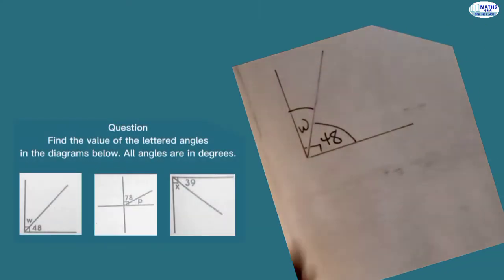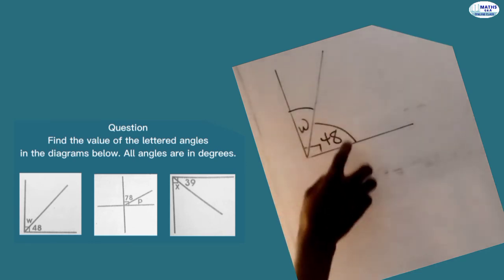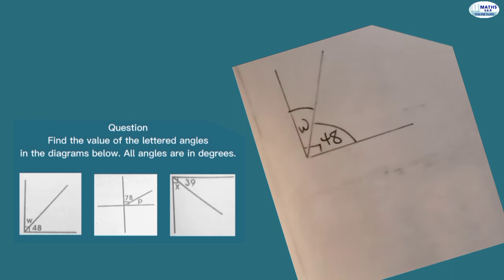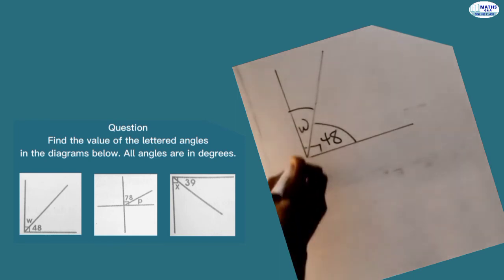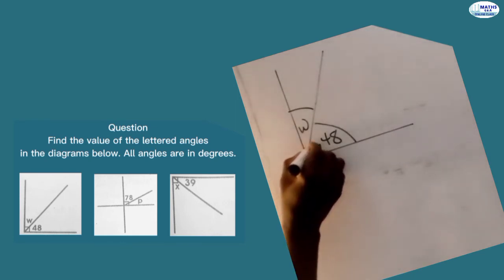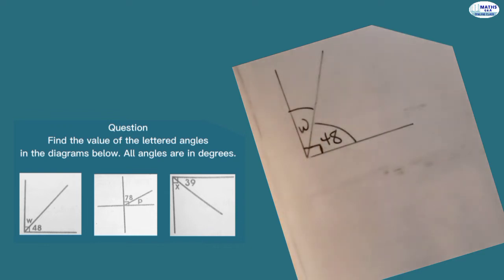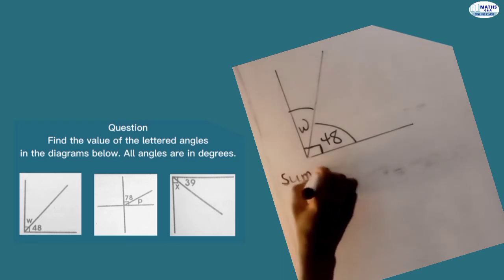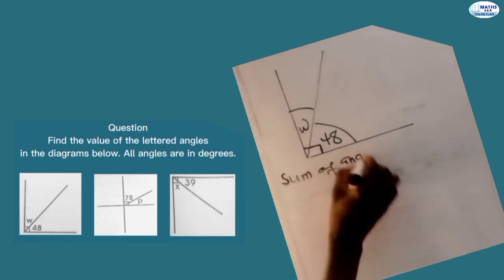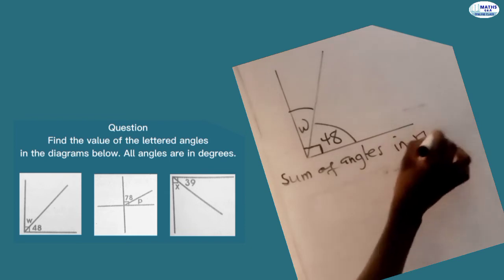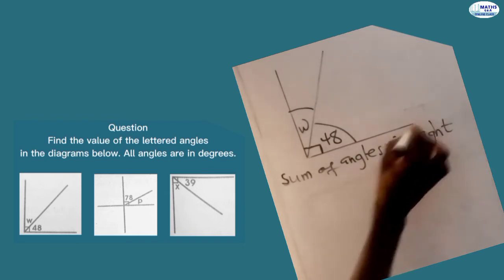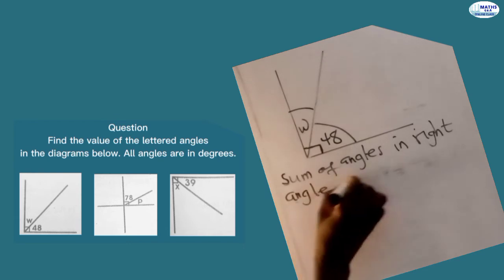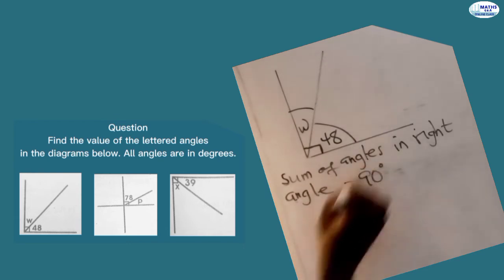So in this diagram, we have W and we have 48 here. These angles are formed within a right angle. Whenever you see this figure, it means the angle formed is a right angle, as we know already. So to find the value of the lettered angle, we write: sum of angles in a right angle is equal to 90 degrees.